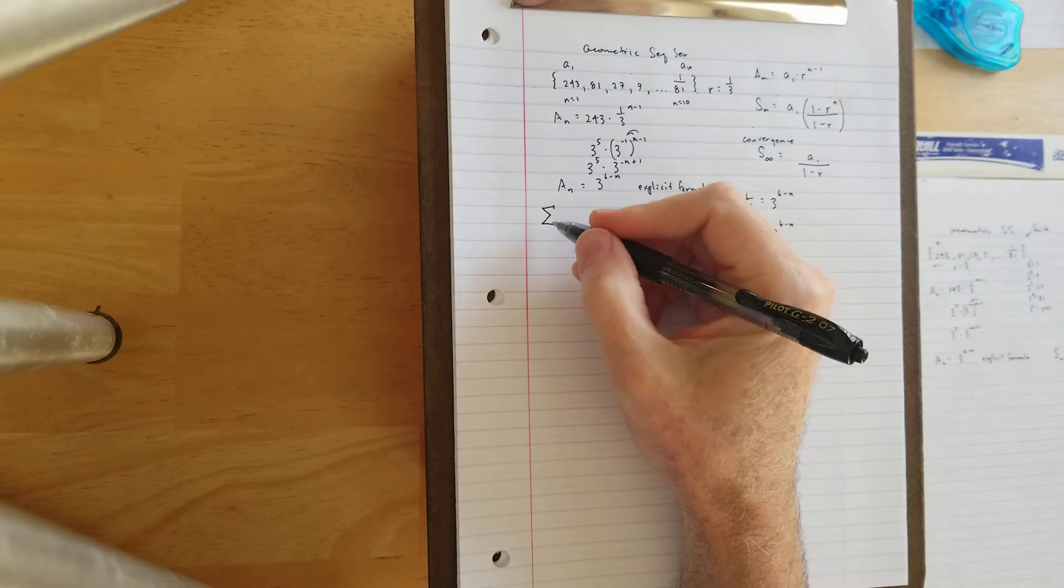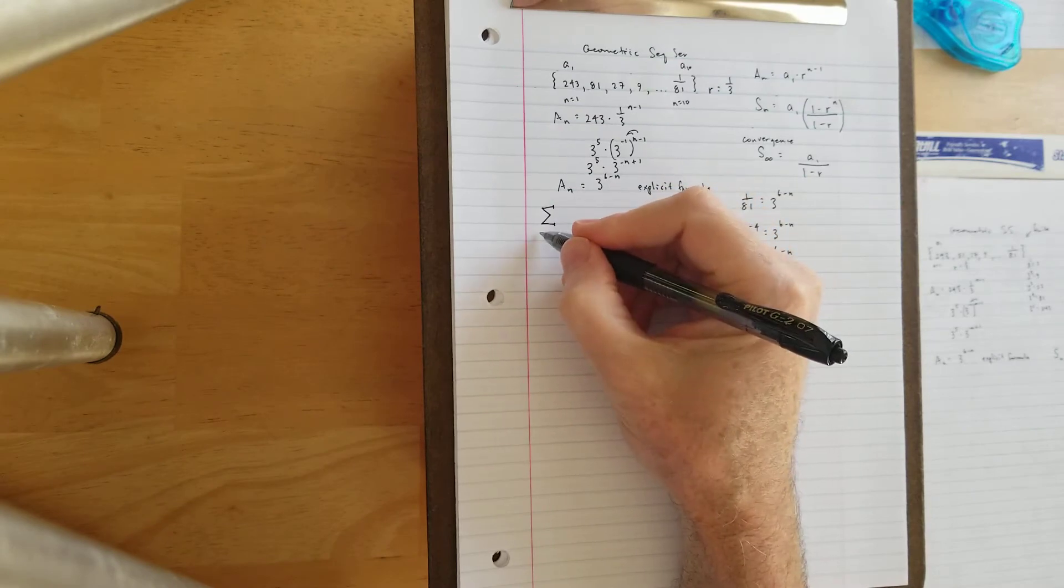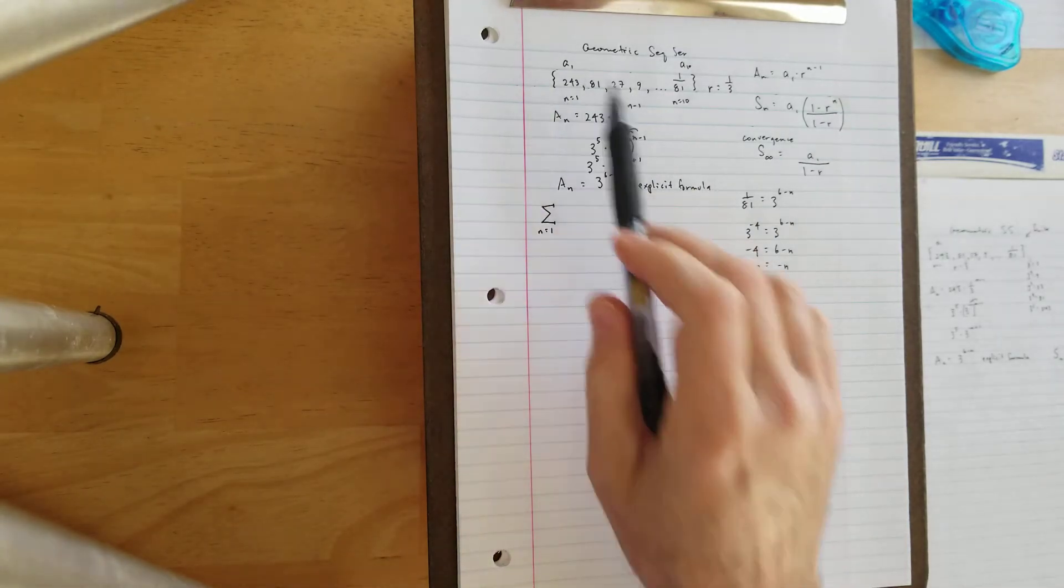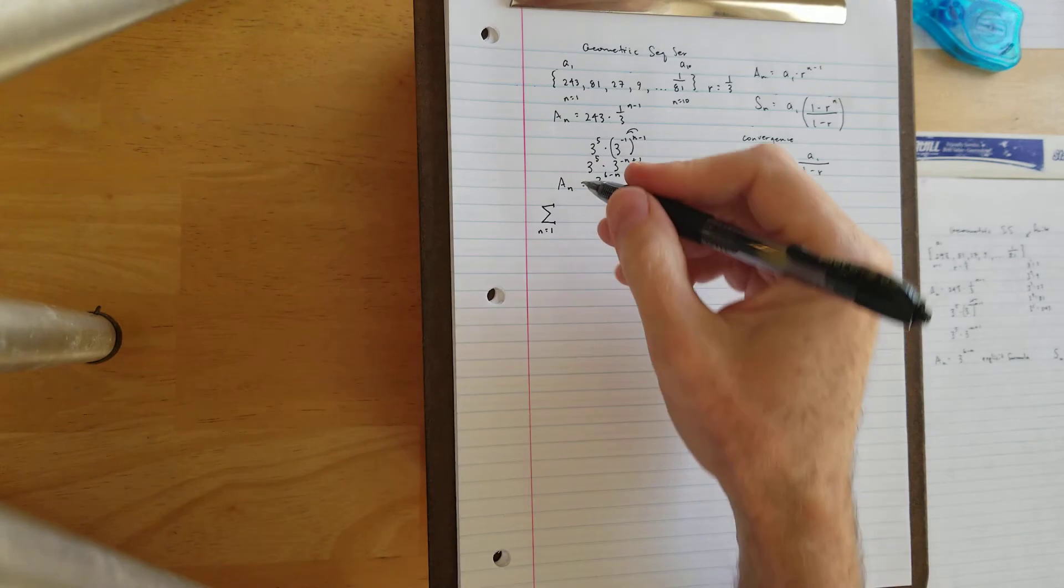The index for us is going to be n equals 1, because that's going to be the subscript of our first term. This is not a 0th term, so we'll use 1.